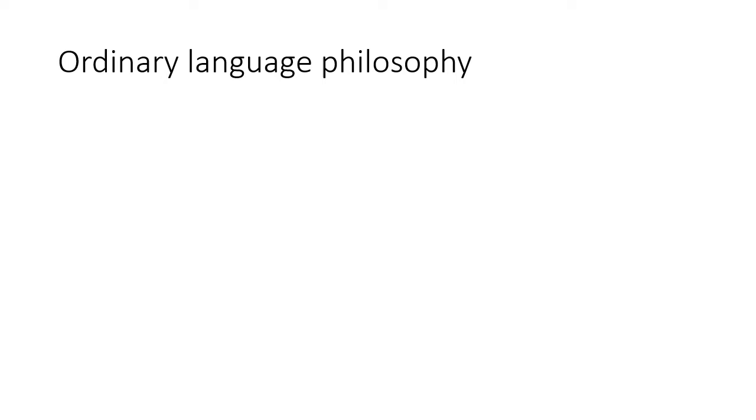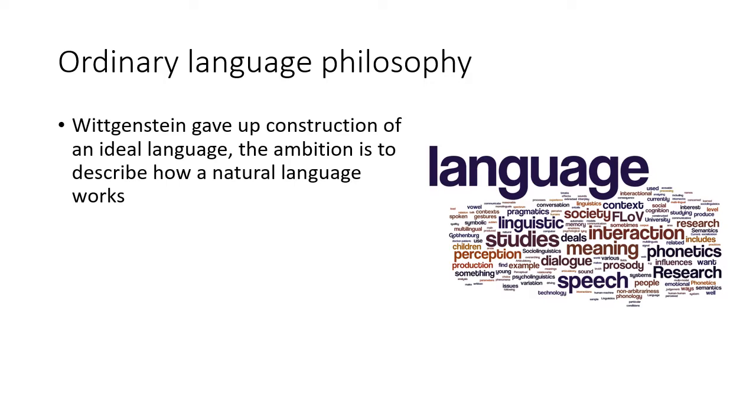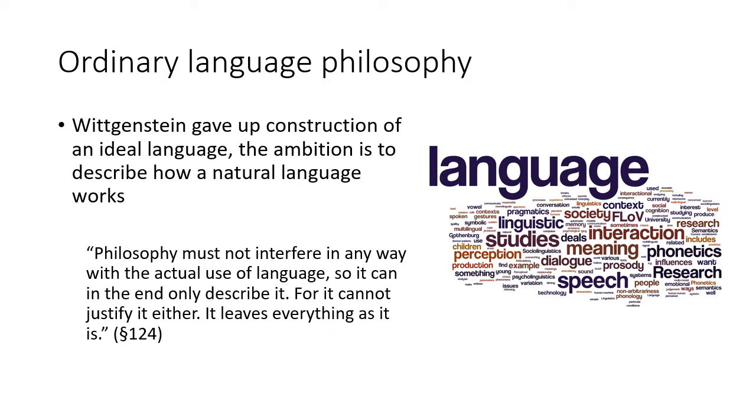The other difference between Tractatus and Investigations was in the topic of both books. In Philosophical Investigations, Wittgenstein gave up construction of an ideal language. His ambition was now to describe how a natural language works. To quote from Philosophical Investigations, paragraph 124: Philosophy must not interfere in any way with the actual use of language, so it can in the end only describe it. For it cannot justify it either. It leaves everything as it is.